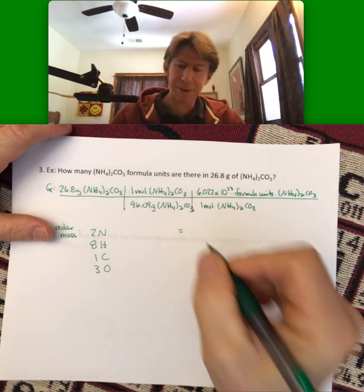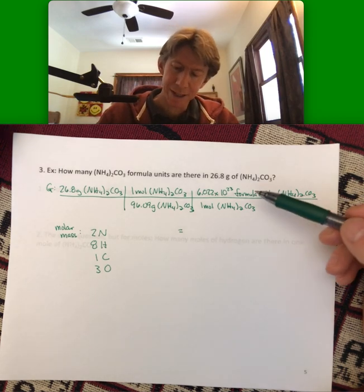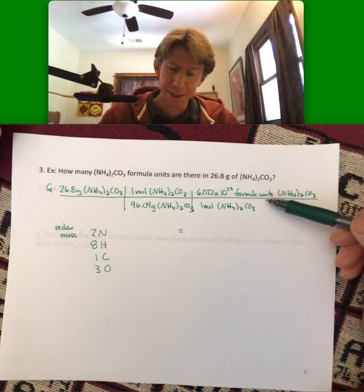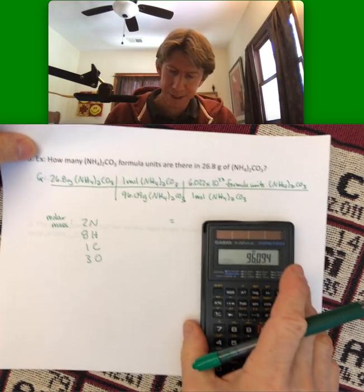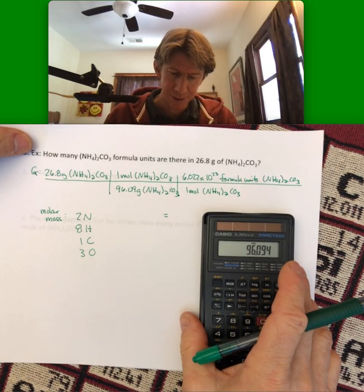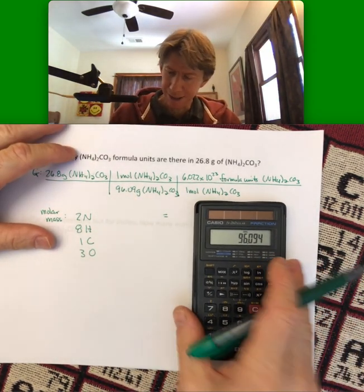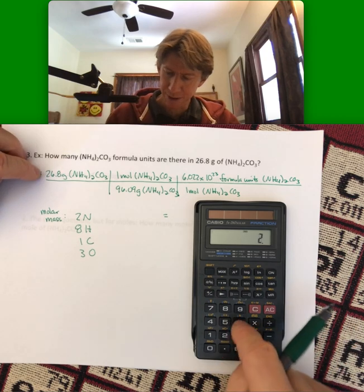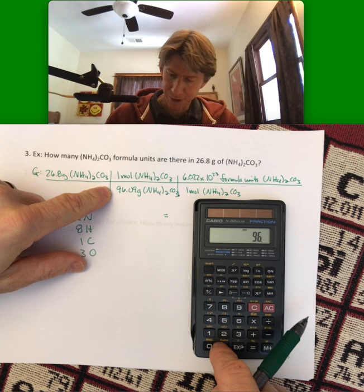And so now, again, the math is the same as the last problem for H2O. But this time we have formula units as our answer for this one. That's part of the units. Let's see. Grams of this cancels. Yes. I like to double check that my units cancel. Then it's multiplying, 26.8 divided by 96.09